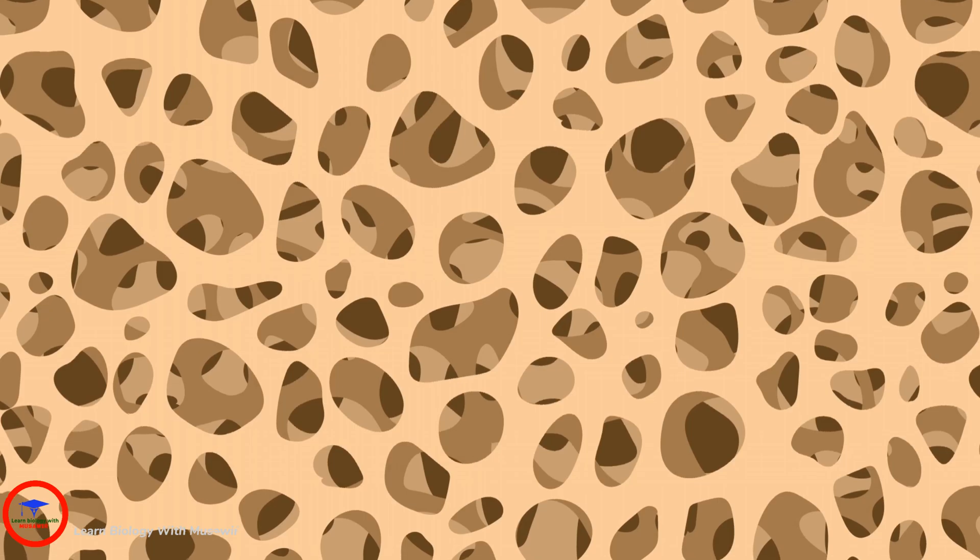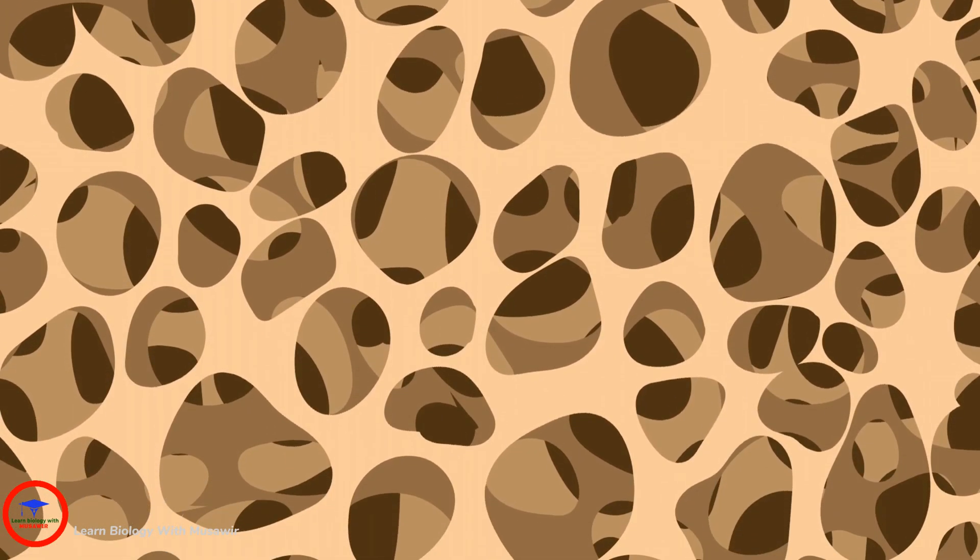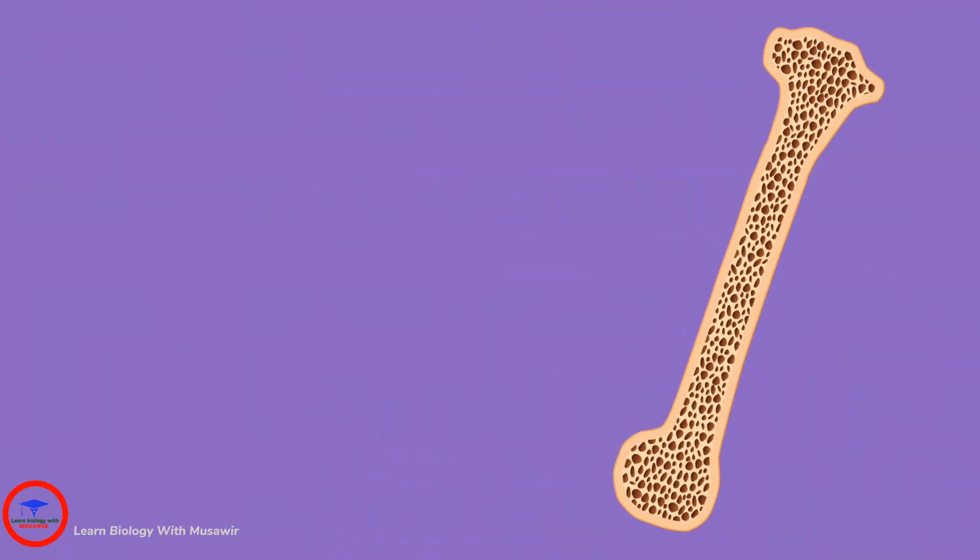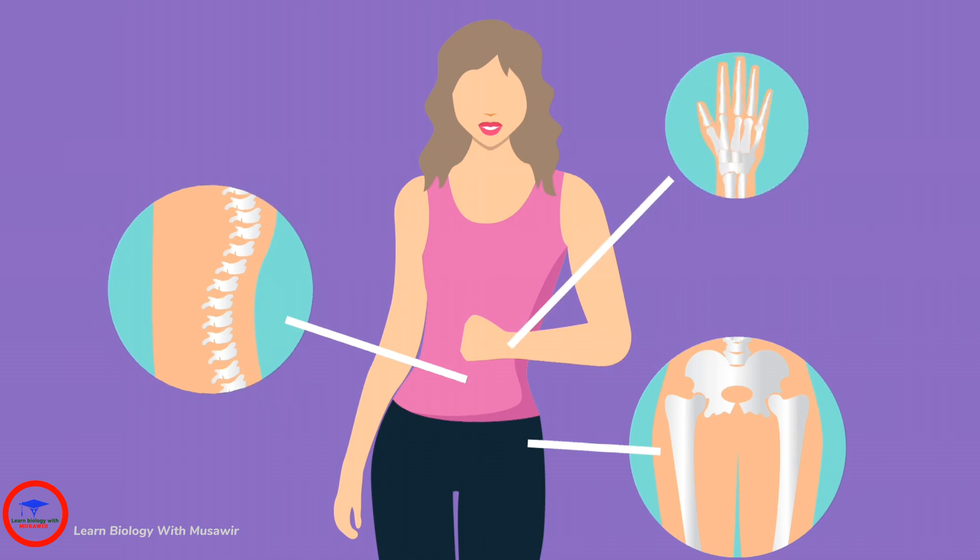Healthy bones have a honeycomb structure, but with osteoporosis, the spaces inside grow bigger. This makes your bones less dense and more likely to break, especially in your hip, spine, and wrist.